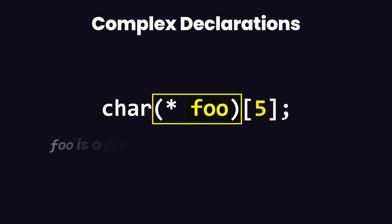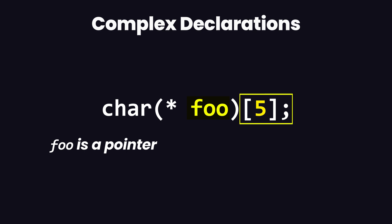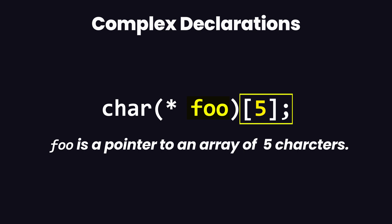So we can say that 'foo' is a pointer. Then, since we have established that foo is a pointer, we can come out of this parenthesis and look at its postfix, which is an array of five characters. So we can say that foo is a pointer to an array of five characters. That's how you untangle this particular declaration.